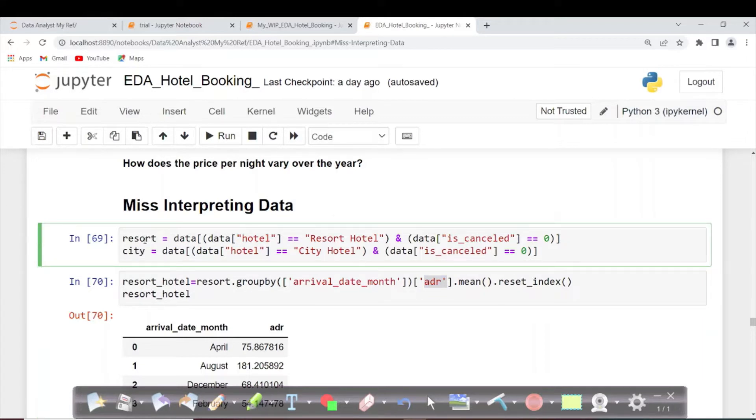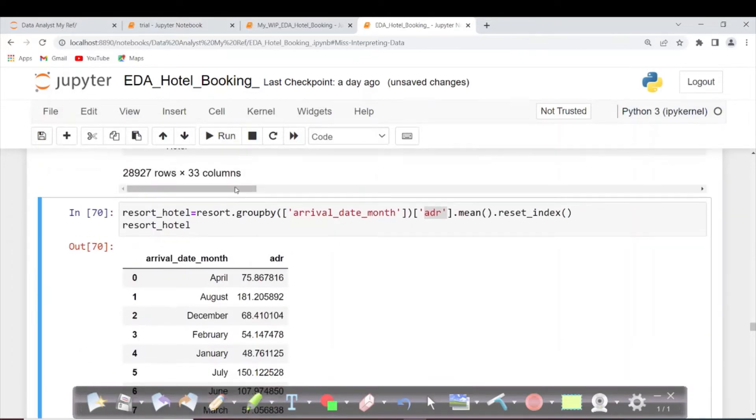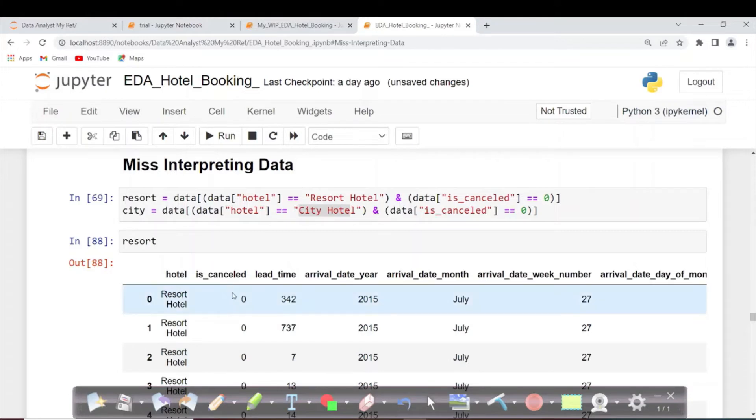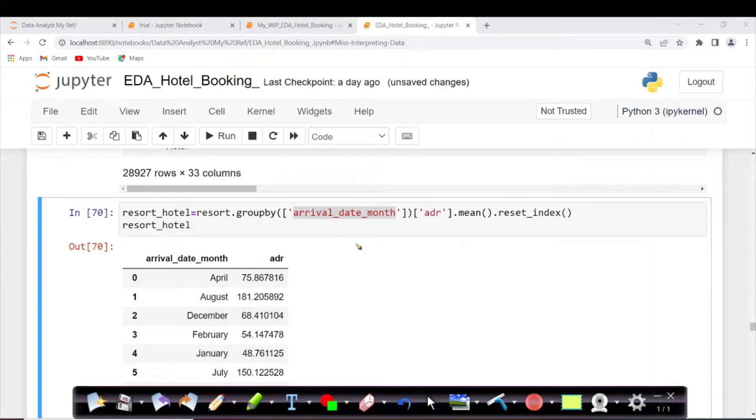Step one, create two data frames. Resort and city. Resort is having resort hotel data and is cancelled is equal to zero. This is what this line of code is doing. And we are storing that in resort. Same thing with city. The only difference is we are storing city hotel data. If you want, you can just see execute this. It's having all the resort information and we're making sure that is cancelled is equal to zero.